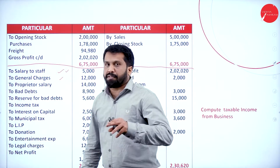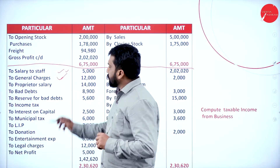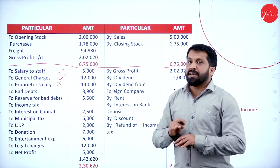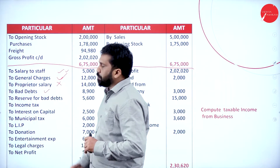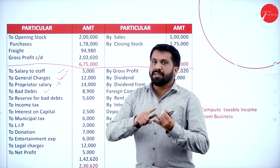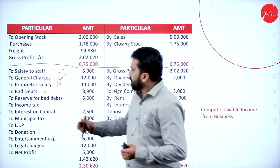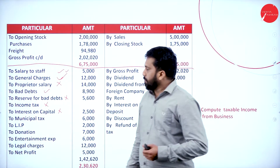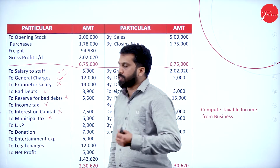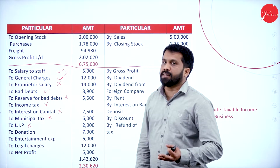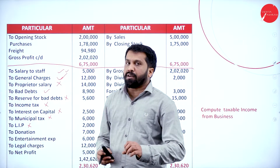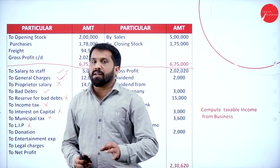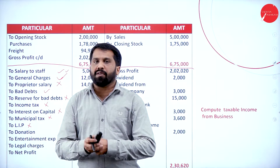In this, salary to staff is part of the business. General charges — part of the business. Proprietor's salary you are supposed to consider because proprietor's salary is his personal — it is not part of the business. Any provisions, any reserve — we have to consider which are not part of the business. So your reserve for bad debts, income tax, interest on capital — capital is also personal. Municipal tax paid on house. Life insurance premium — paid for personal. Donation, we have to see: if donation paid for trade association, then it is a part of the business.